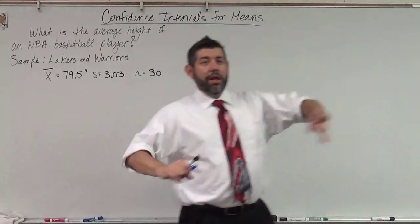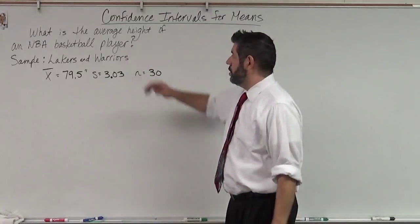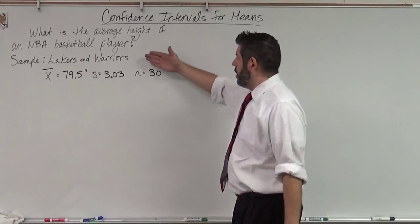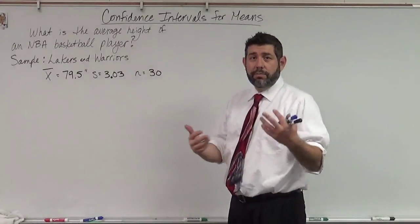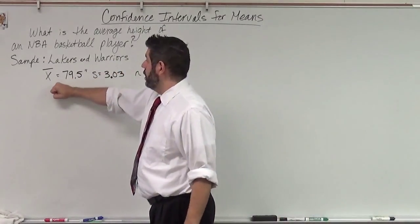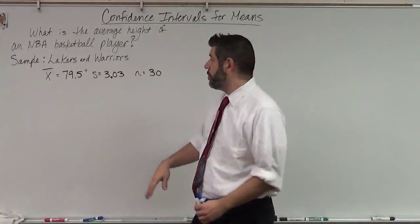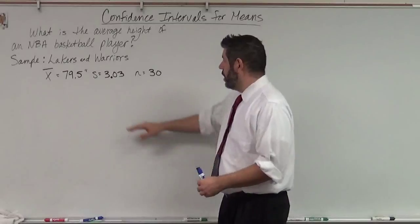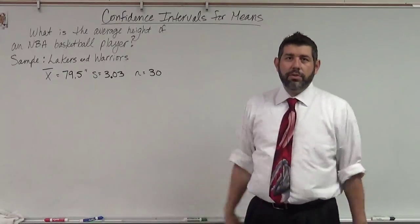I'm not going to take all of the data for every single player in the NBA. But what I can do is take a sample of two teams. I'll take those heights, because there are only 30 players in two teams — each team has 15 players. I've found that the average of these two teams is 79.5 inches.